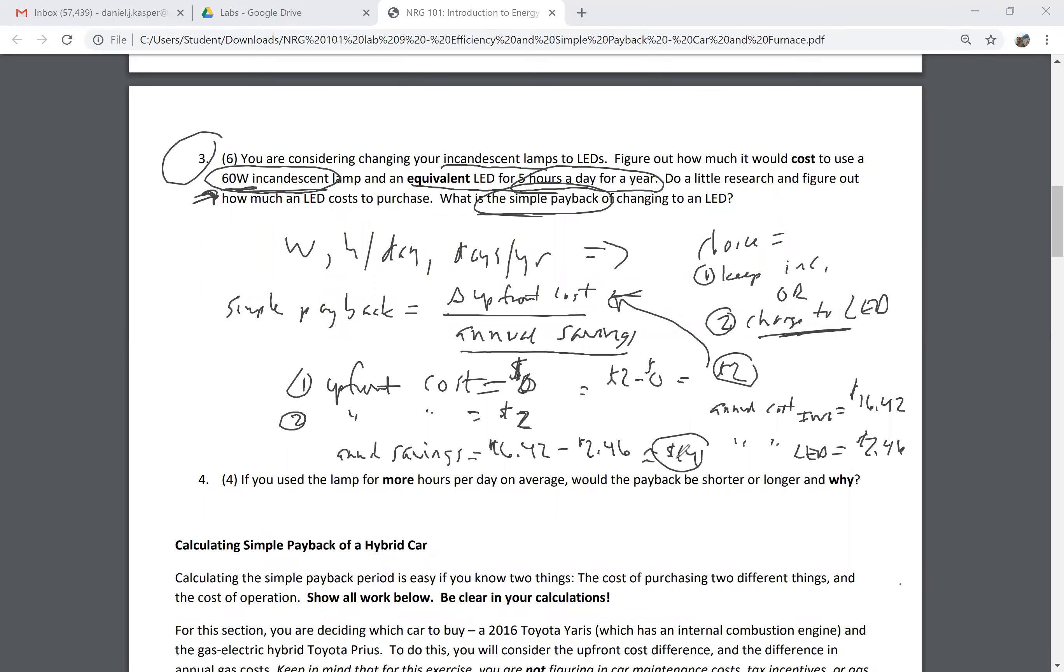My upfront cost difference is $2, my annual savings is about $14. So my simple payback is really easy. You just do upfront cost difference, $2, divided by my annual savings, $14 per year, and if you do the math you're going to get about 0.14 years.